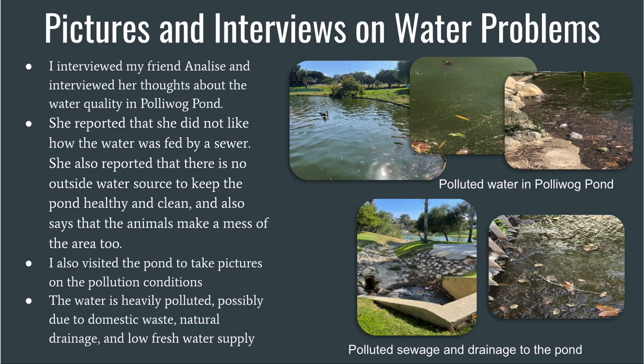The second person I interviewed was my friend Annalise, and I asked her about the water quality in Pollywog Pond. She reported that she did not like how the water was fed by sewer, that there is no outside water source to keep the pond healthy and clean, and that the animals also make a mess in the area. I visited the pond to take pictures of the water pollution conditions — the water is clearly and heavily polluted, possibly due to domestic waste, natural drainage, and low fresh water supply.